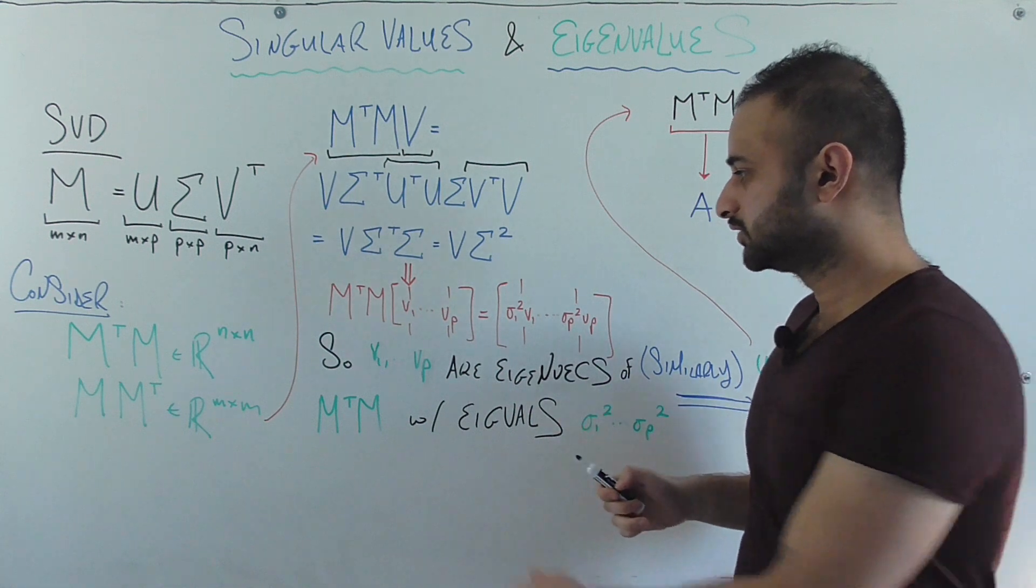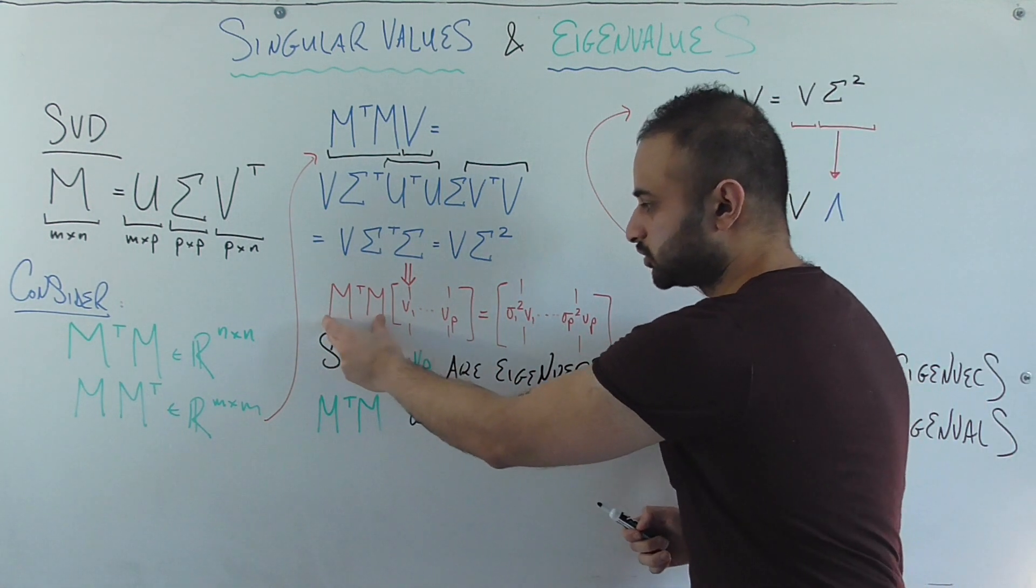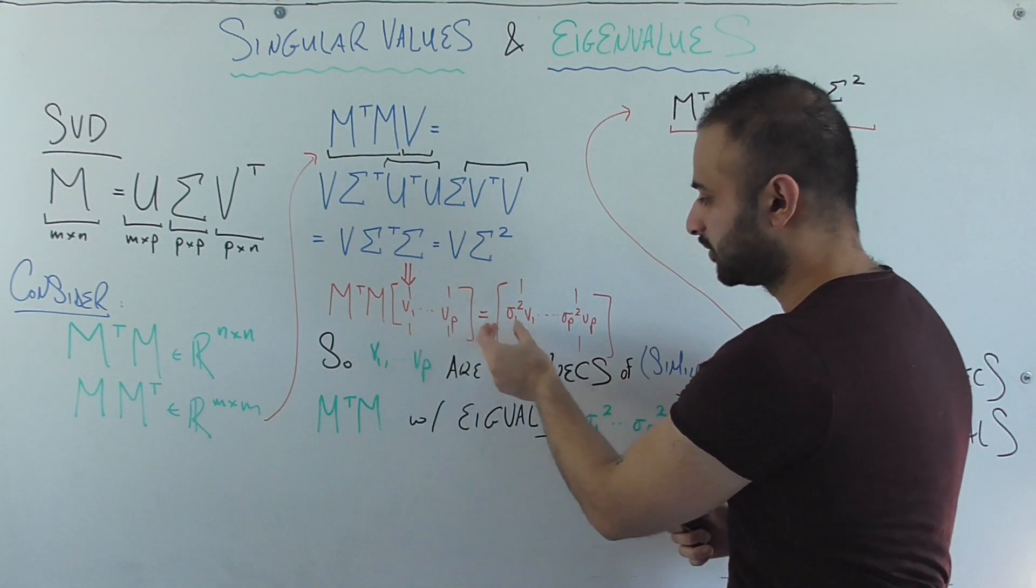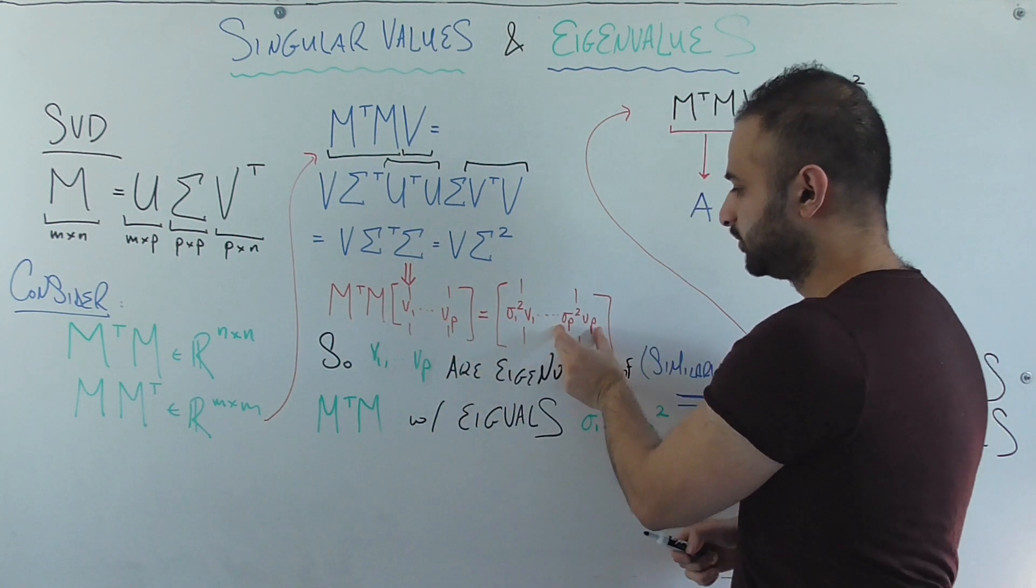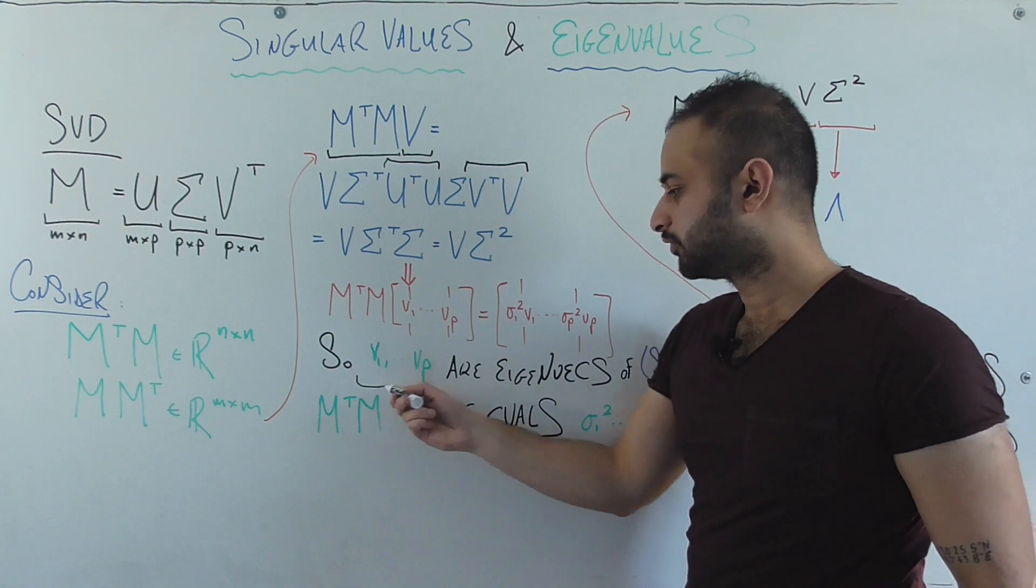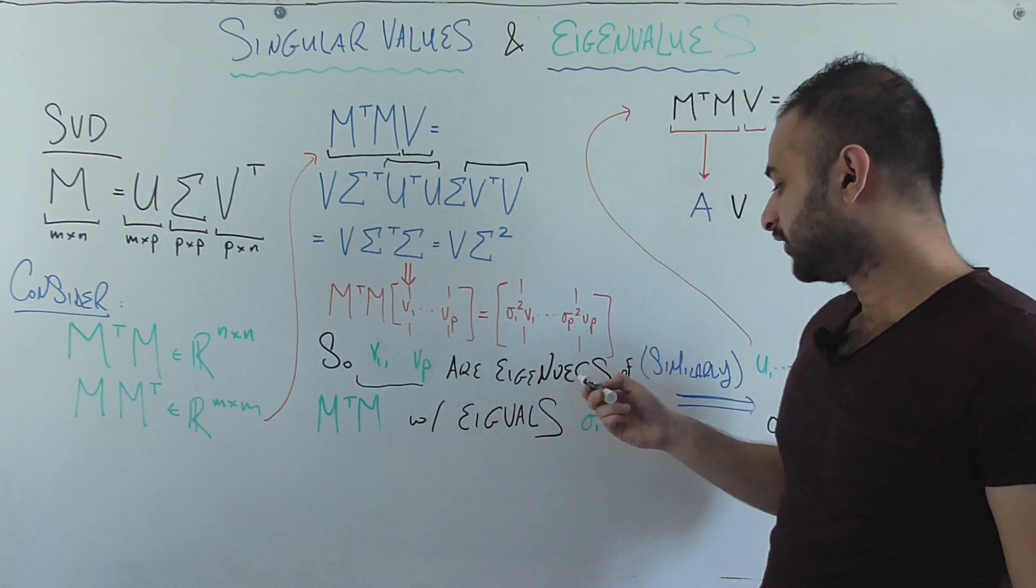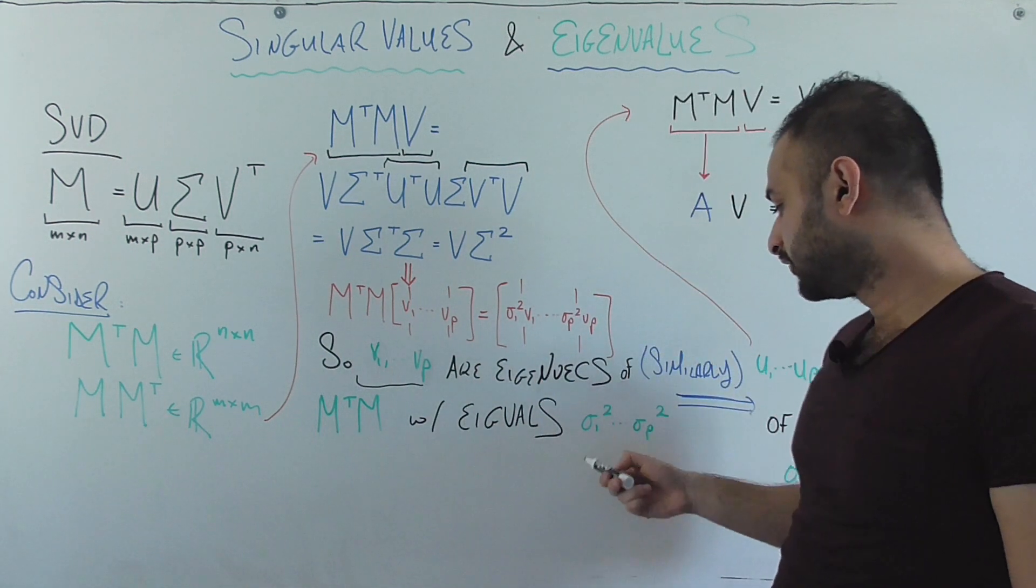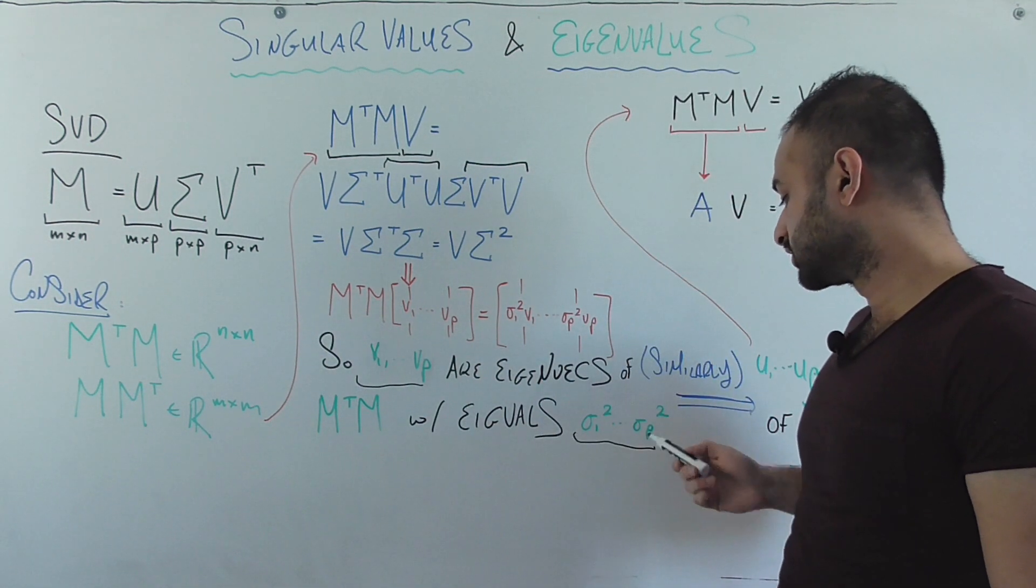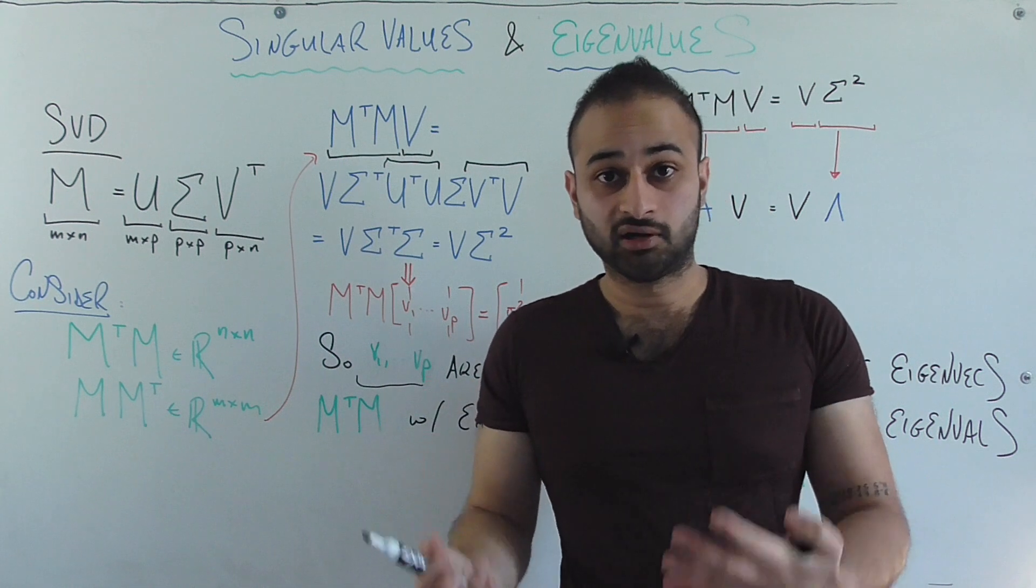So what this means, if you look at this, this is saying that take this matrix times V one and you get back sigma one squared V one. Take this matrix times VP and you get back sigma P squared VP, which means that V one through VP are the eigenvectors of M transpose M and their corresponding eigenvalues are sigma one squared all the way to sigma P squared.